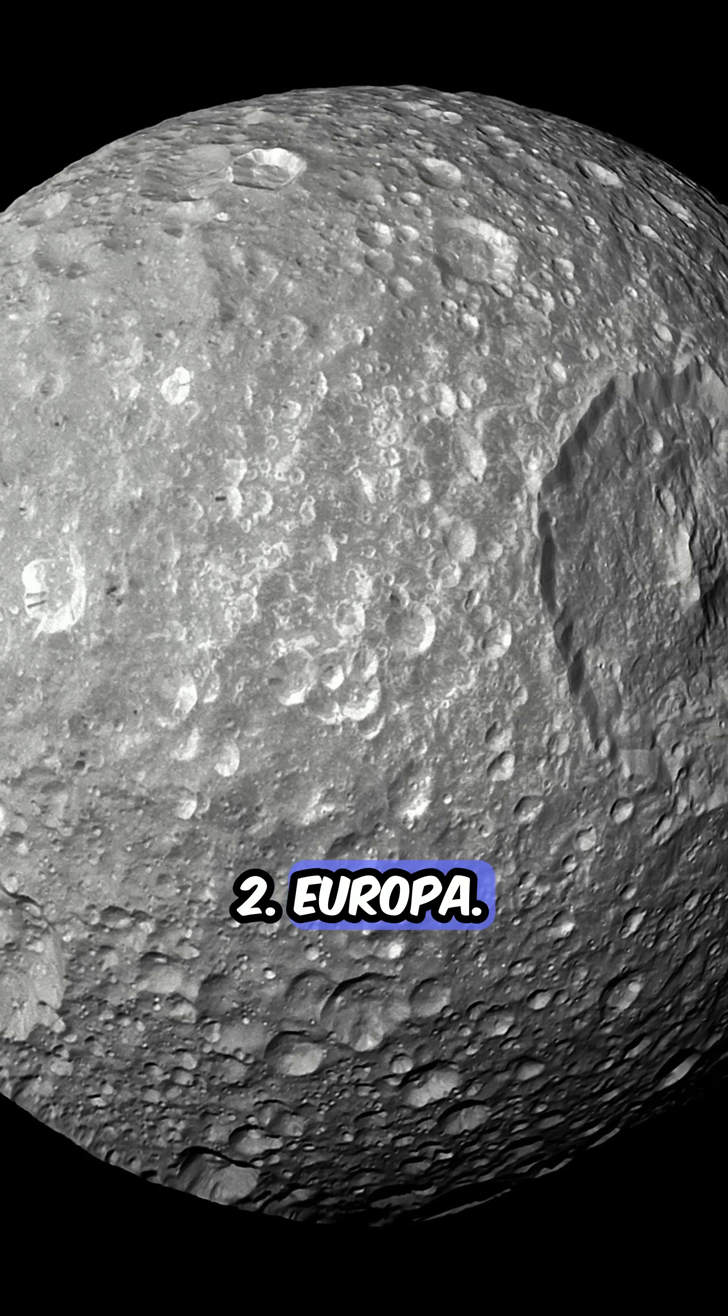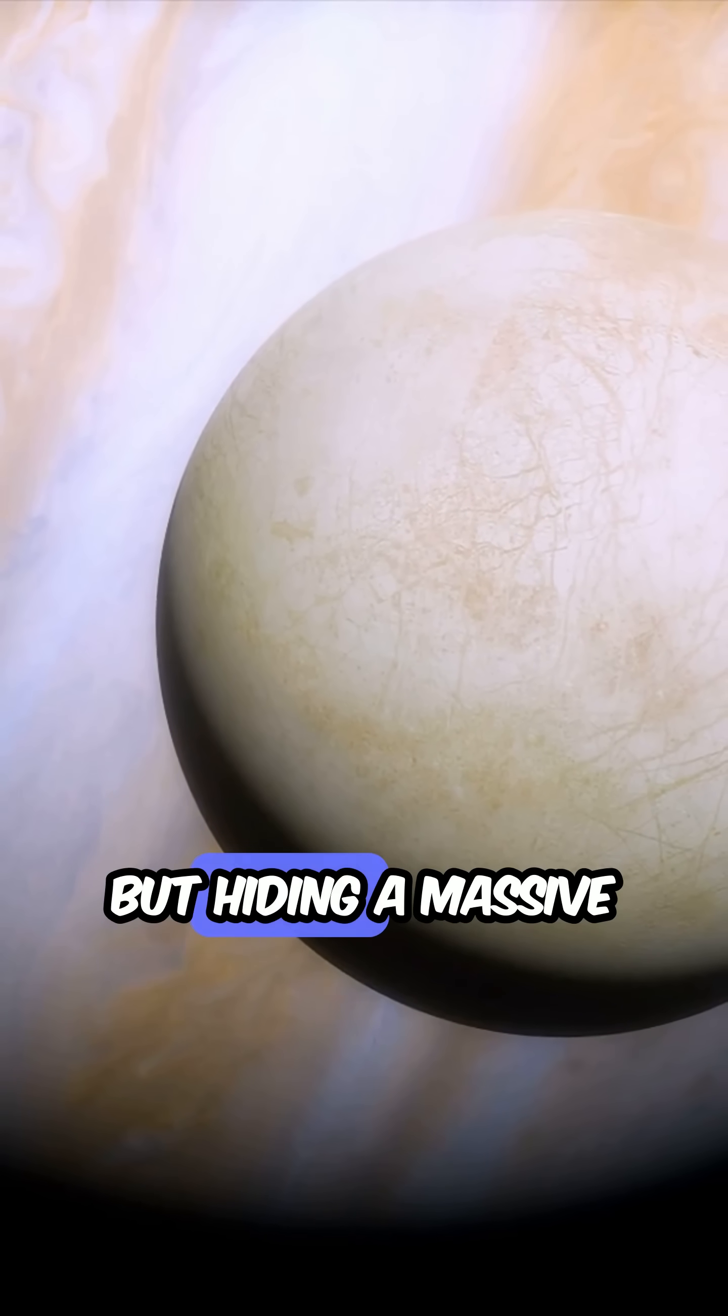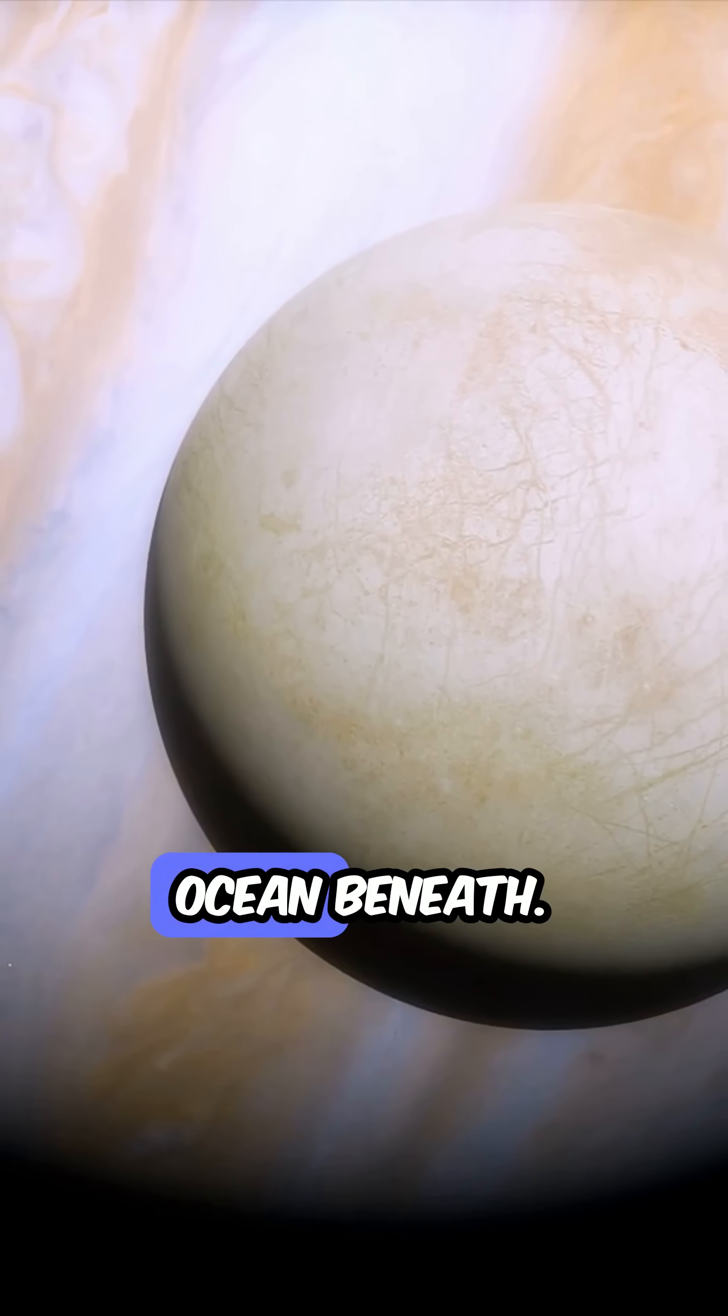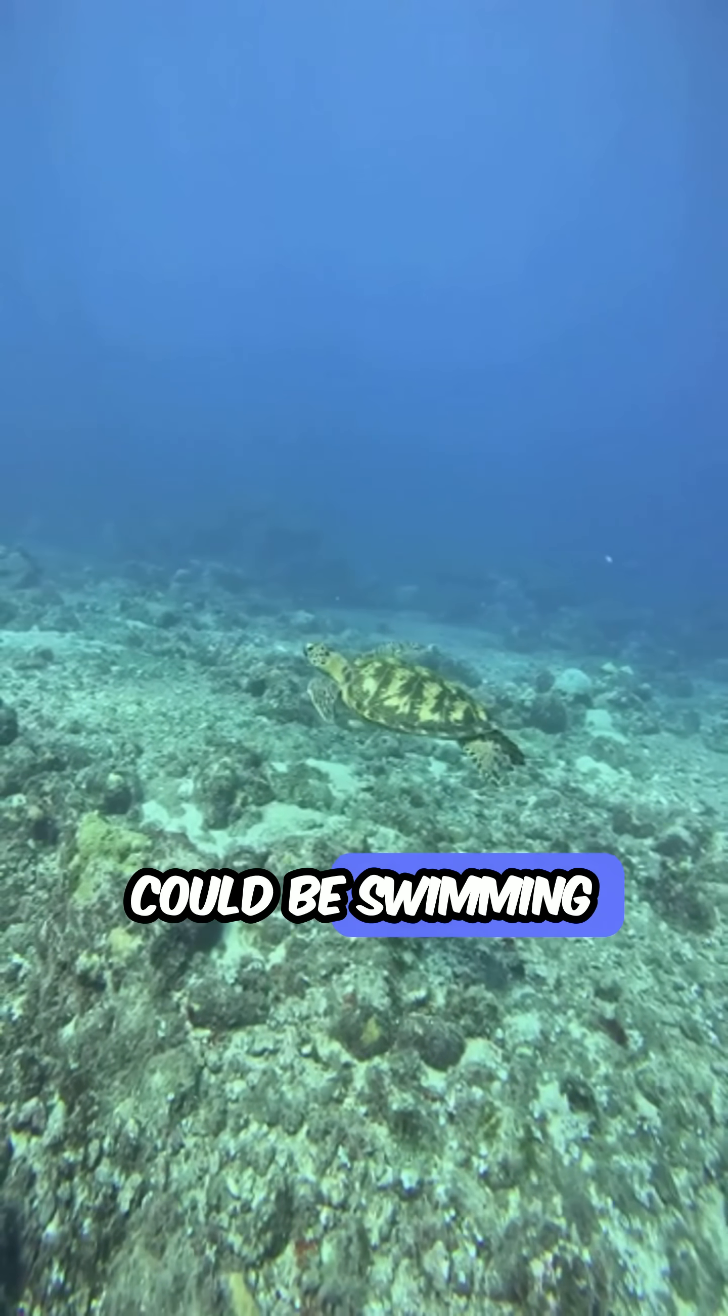Number 2: Europa. Frozen on the outside but hiding a massive saltwater ocean beneath. NASA thinks life could be swimming down there.